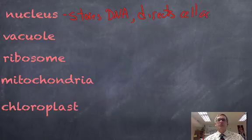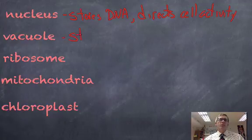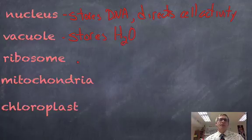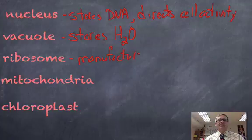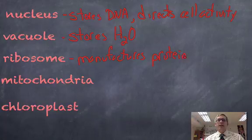The vacuole is very prominent in plant cells. It stores water. The ribosome manufactures protein. Proteins are made out of amino acids, and the order or the sequence of amino acids is determined by the information that's in the DNA.